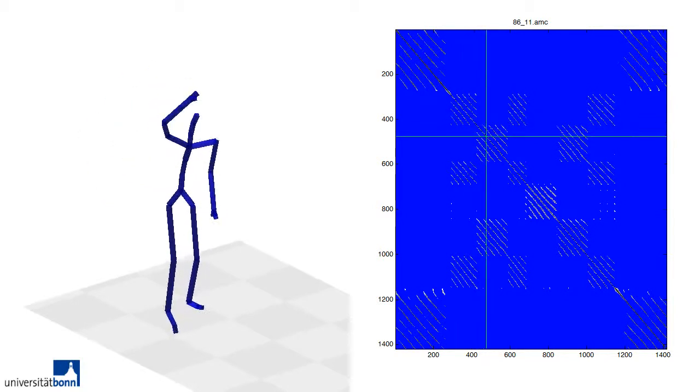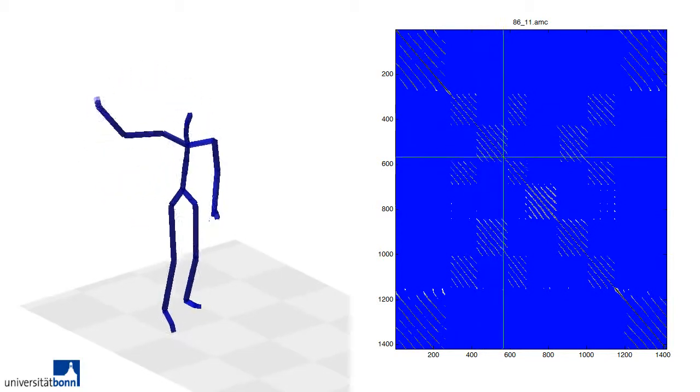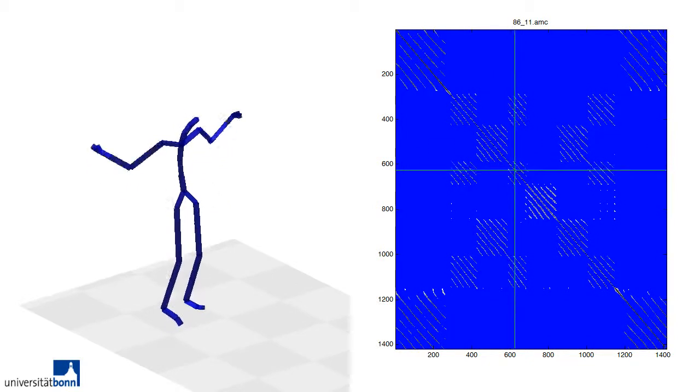This is done exploiting a sparse self-similarity matrix of the temporal series of all poses occurring in the motion sequence.